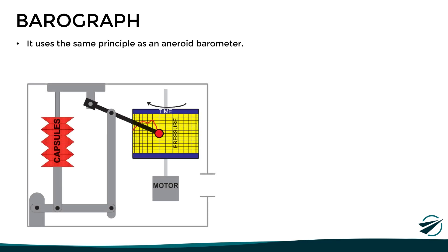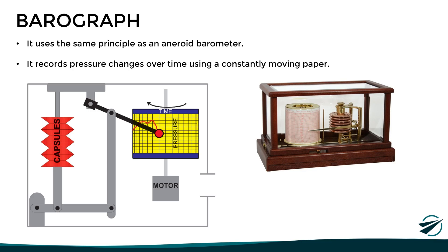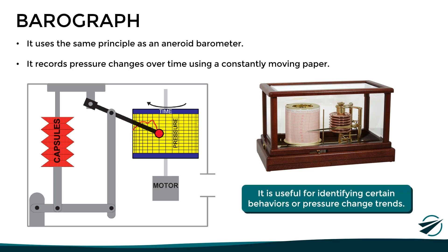So, with this being said, let's look at the barograph, which is an instrument used to record pressure changes over time. In simple terms, it uses the same principle as an aneroid barometer. But the difference is that it not only indicates, but also records pressure changes over time using a constantly moving paper. This instrument is very useful for identifying certain behaviors or pressure change trends within a certain period of time, and therefore allow for more accurate weather forecasts and models. We must emphasize that atmospheric pressure plays a major role in the development of atmospheric conditions, and it is therefore important to know how to read and interpret changes in pressure using the barometer and the barograph.